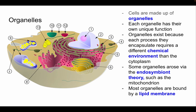A huge part of cells is organelles, and organelles each have their own unique function. Organelles exist because each process they encapsulate requires a different chemical environment than the cytoplasm. For example, the mitochondrion has a different chemistry than the cytoplasm, so it needs to be fenced off — otherwise the cytoplasm would interfere with the chemistry going on inside. It's a very high-energy, low-entropy, highly organized environment.